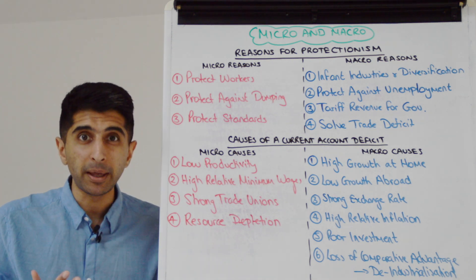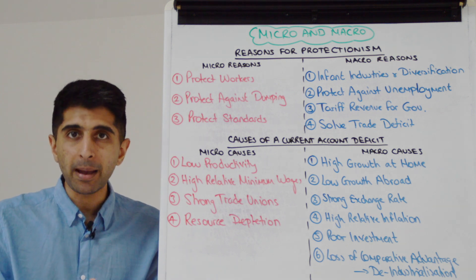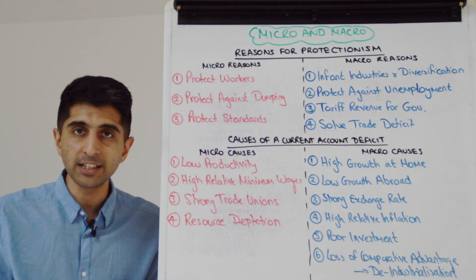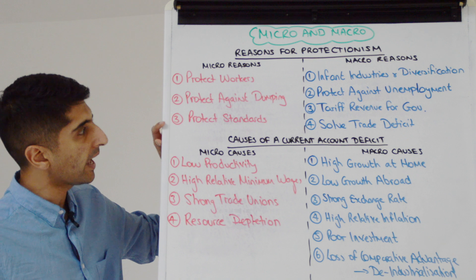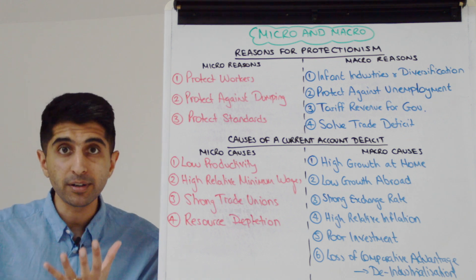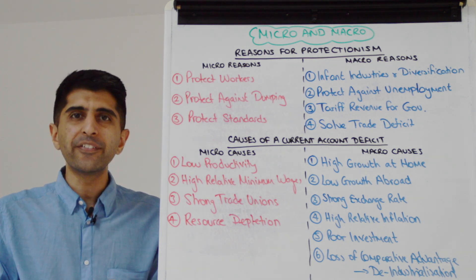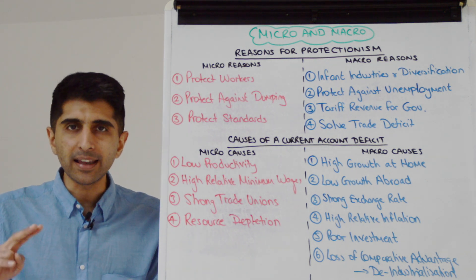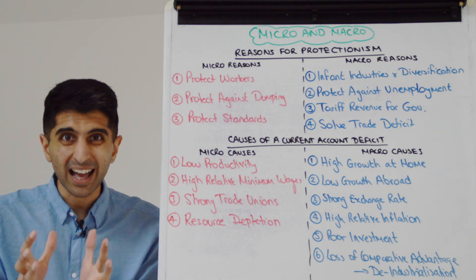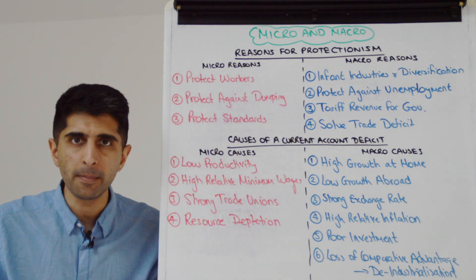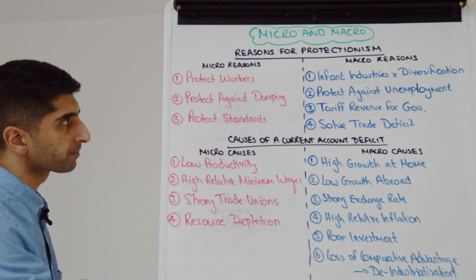Protect against dumping — here you go into the micro effects of dumping: the impact on domestic businesses if products are being dumped, and the impact on jobs as a result of that. You would also talk about protecting standards — product standards, health and safety standards, environmental standards, worker rights. These are definitely micro reasons for protectionism.